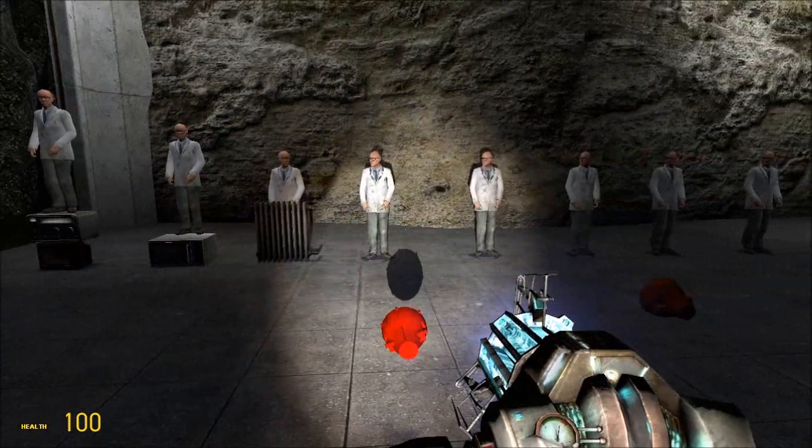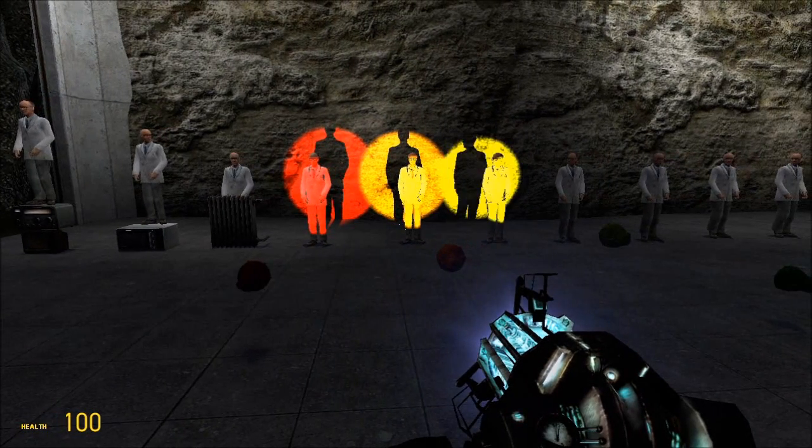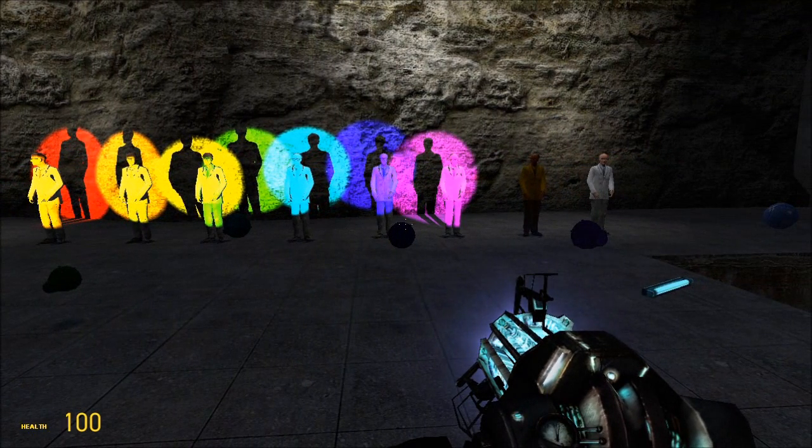At increasingly higher energies, we have then red, orange, yellow, green, blue, indigo, and finally violet in the visible.